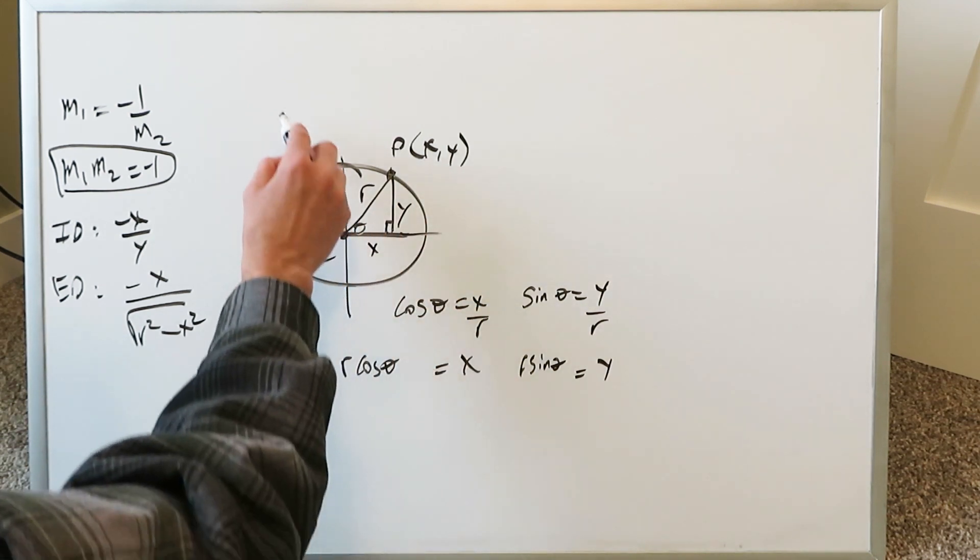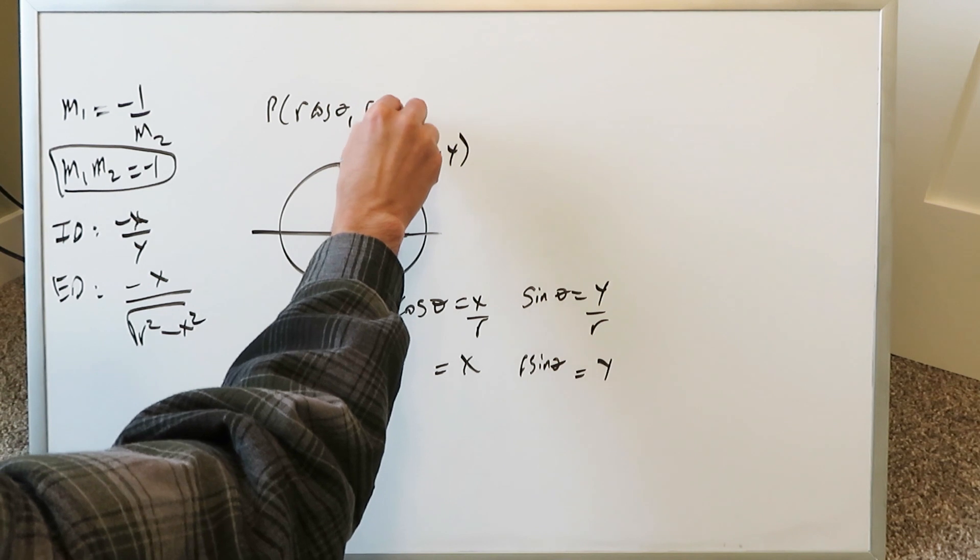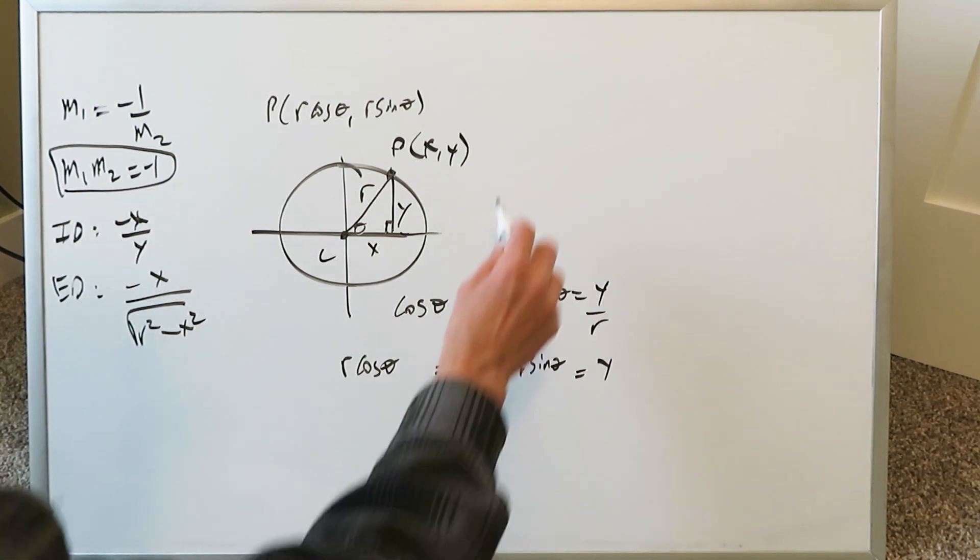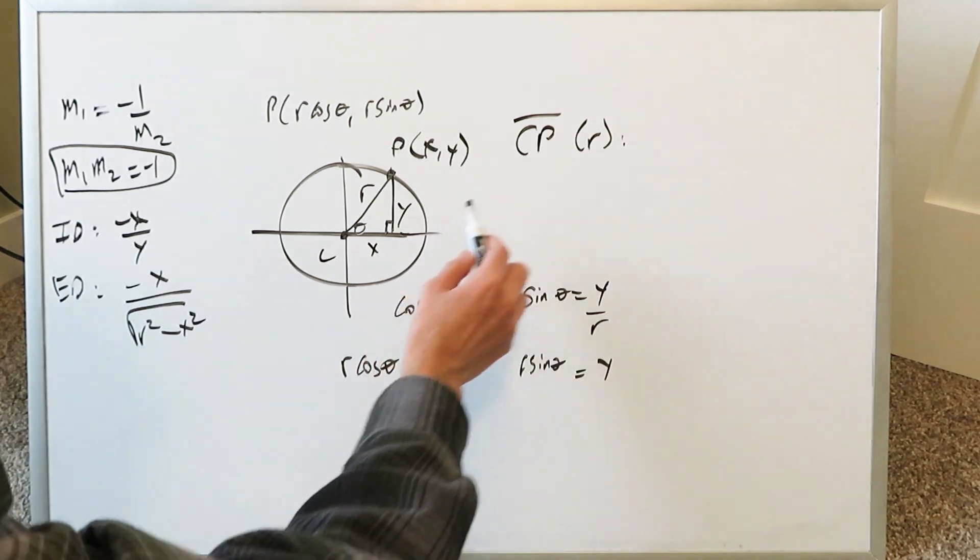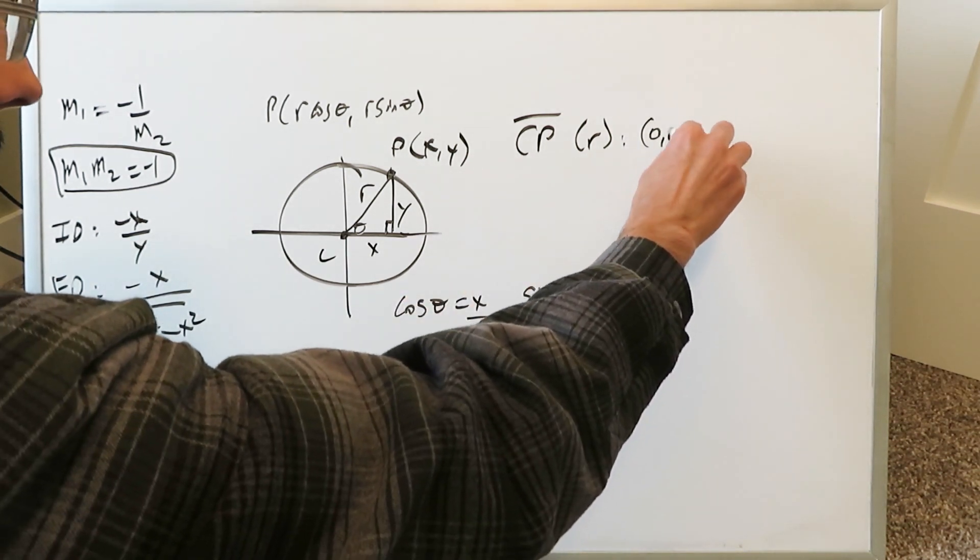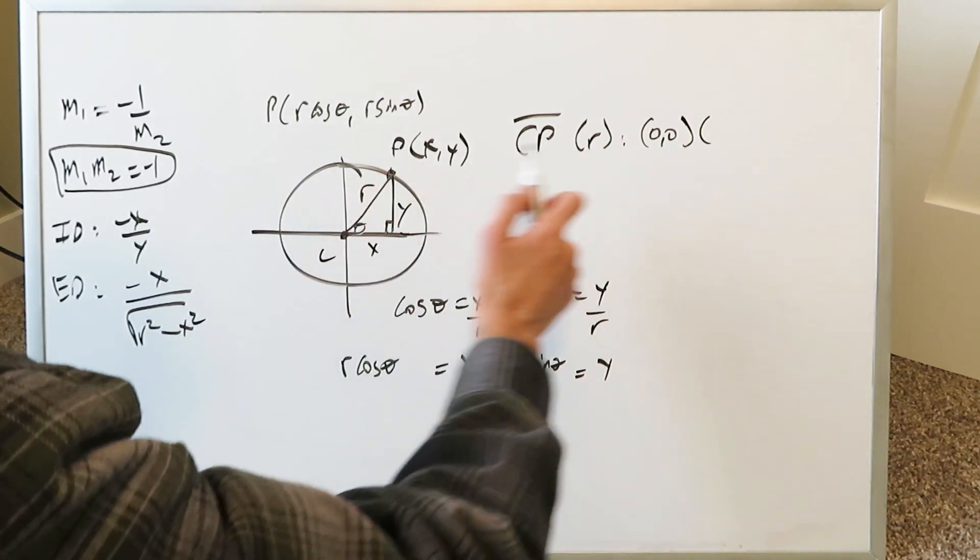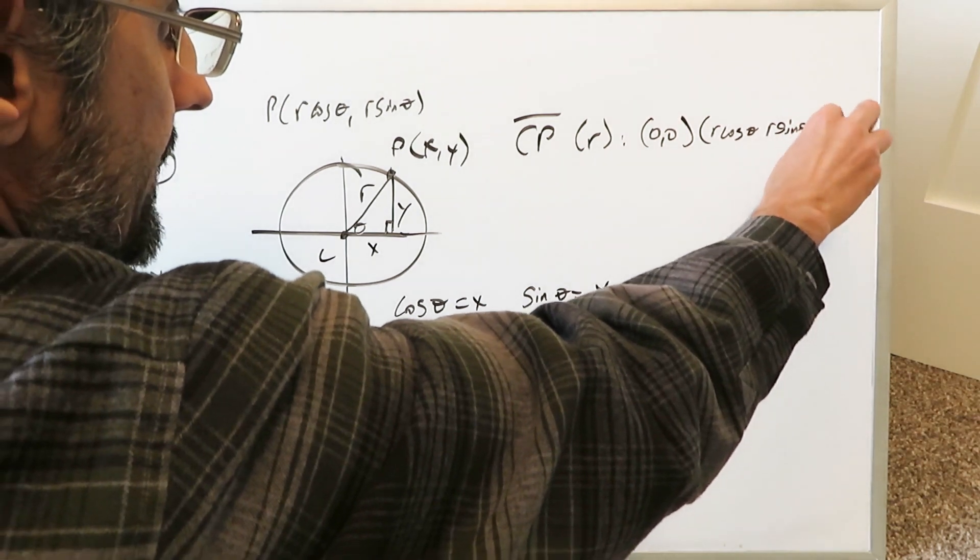This point p is now very well written as r cosine theta and r sine theta. These are your x and your y coordinates of that specific point p. If you look at the segment CP, our segment CP very well represents the radius, and I'm writing it there. It has the following points that it goes through: 0, 0, the origin, and this point p, which is r cosine theta and r sine theta.